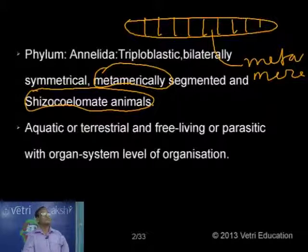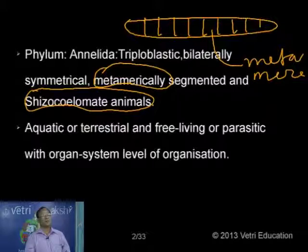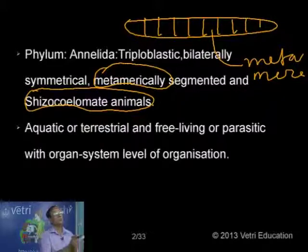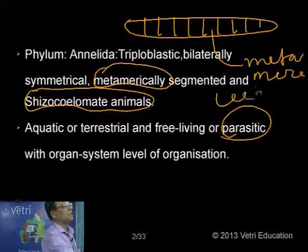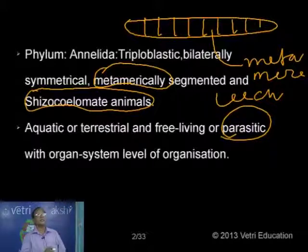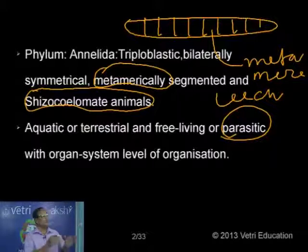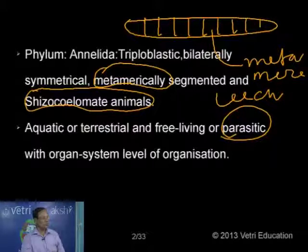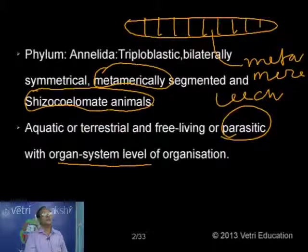Considering the habit of these animals, the animals may be terrestrial or aquatic, or free living or parasitic. For example, the earthworm is a free-living form, and a leech is a parasitic form. These animals have developed specific organs for doing different functions, so we have organ system level of organization.